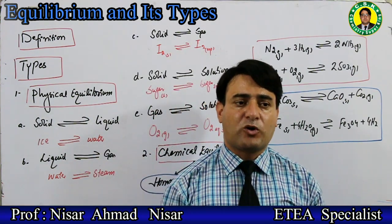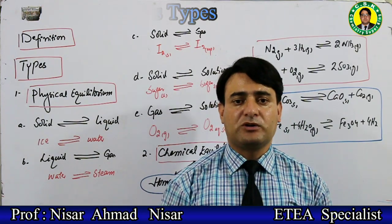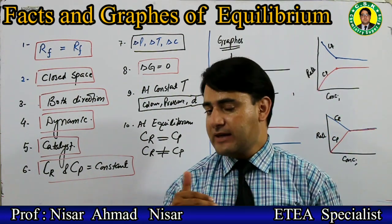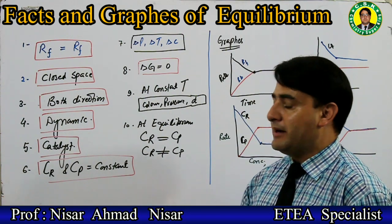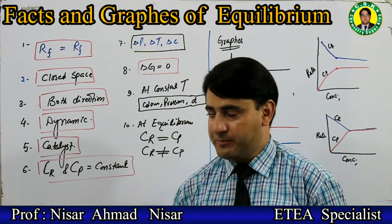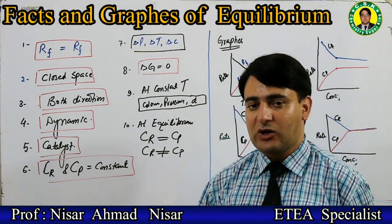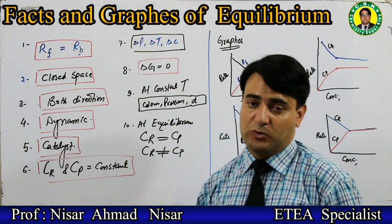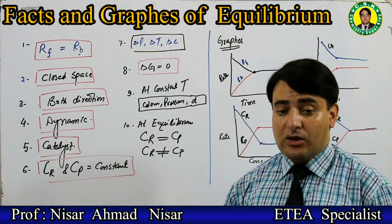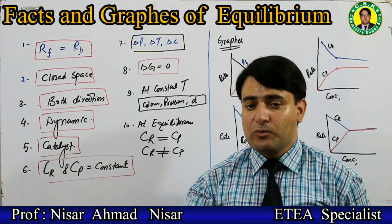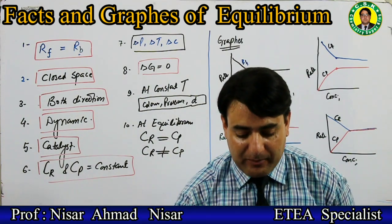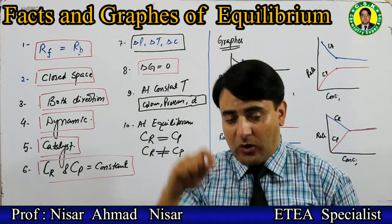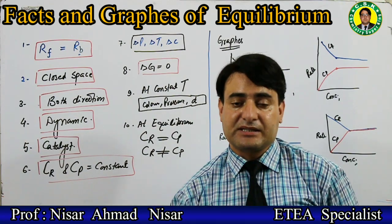Now, facts about equilibrium. At chemical equilibrium, the rate of the forward process is equal to the rate of the backward process - two opposing phenomena occur together at equal rate. Remember: equilibrium is established only when a reversible process is carried out in a closed space or closed container.